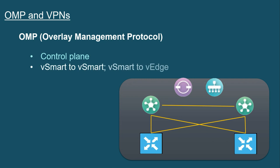OMP is going to be transmitted from vSmart to vSmart controller, and also from vSmart to vEdge. The communications are secured, and that is done with DTLS or TLS, and we'll talk more about that in an upcoming video.